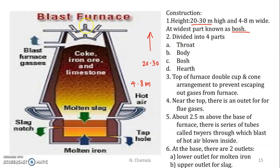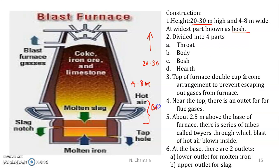It is divided into four parts: the throat at the top, the body in the middle, the bosch — the wider part, and the hearth at the bottom. At the top of the furnace there is a double cup and cone arrangement to prevent hot gases from escaping out of the furnace.